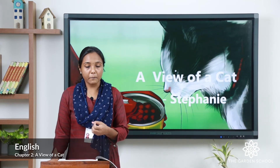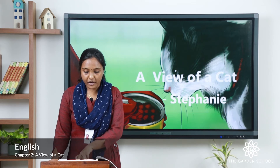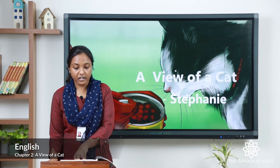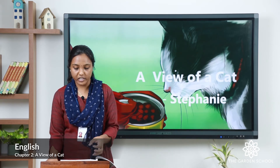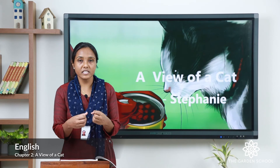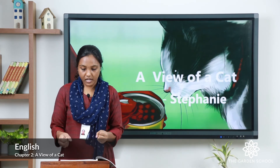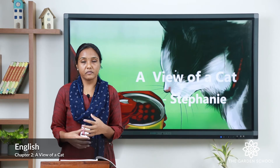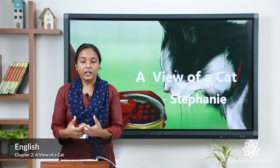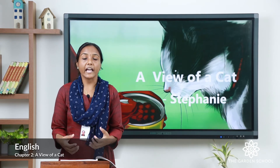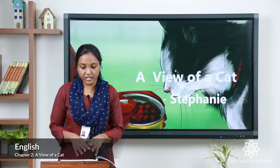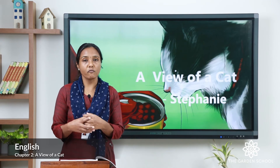'I curl up near the fireplace warming up my cat paws.' The word 'curl' means to sit in a position with your arms and legs close to your body. The cat was sitting near the fireplace, making itself comfortable to warm its paws, keeping its limbs close to the body to get warm.